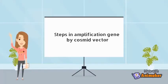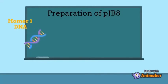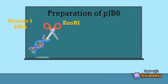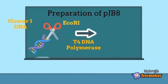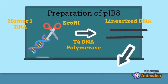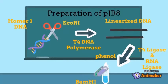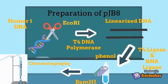Now I would like to introduce the steps in amplification of a gene using a cosmid vector. The cosmid vector used in this experiment is pJB8. The gene of interest is HOMER1 DNA. HOMER1 DNA will be cut with the restriction enzyme EcoRI. Synthetic BamHI linkers were phosphorylated with polynucleotide kinase and ligated to the linearized HOMER1 DNA with T4 DNA ligase and RNA ligase. After phenol extraction, the mixture was digested with BamHI for one hour at room temperature and the digested linkers removed by chromatography. The DNA was then circularized with T4 DNA ligase.